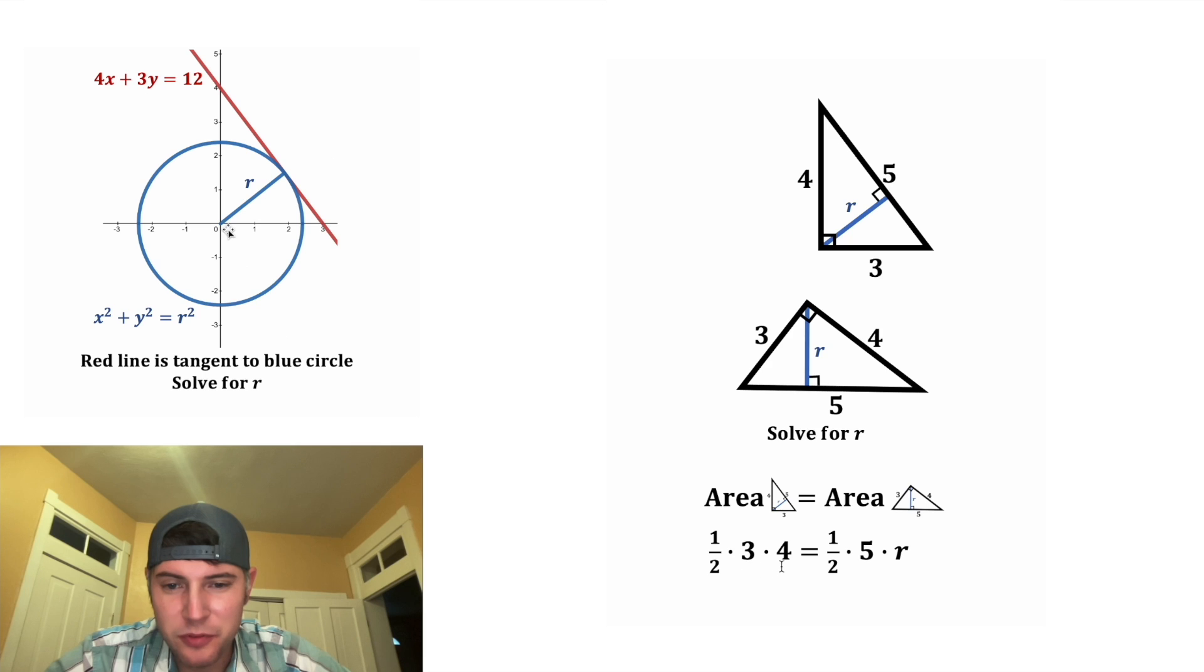On the left-hand side, 3 times 4 is 12, and 1 half of 12 is 6. And on the right-hand side, 1 half times 5 is 5 halves. In order to get the R by itself, I'm going to multiply both sides of the equation by the reciprocal of 5 halves, which is 2 fifths. On the left-hand side, the 6 gets multiplied by the 2 to give us 12 fifths. And on the right-hand side, these cancel each other out. So we have R is equal to 12 fifths.